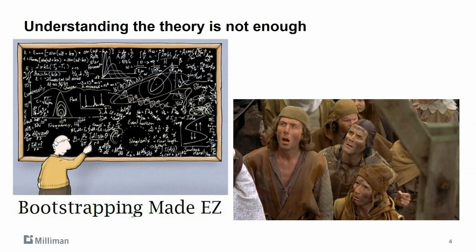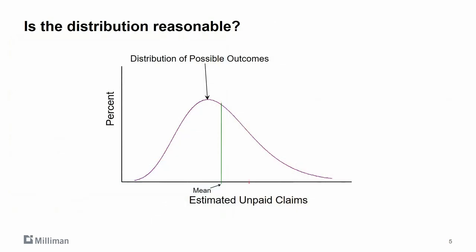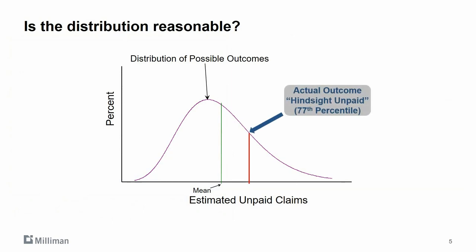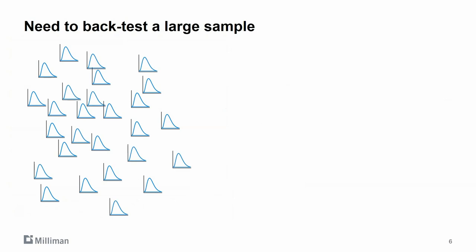So unlike deterministic methods, understanding the theory behind a stochastic model is not enough to know whether the estimates are reasonable or not. The problem is that even with backtesting, only one outcome does not really tell us much about the quality of an estimated distribution. In order to assess quality, we need to backtest a very large number of data sets.